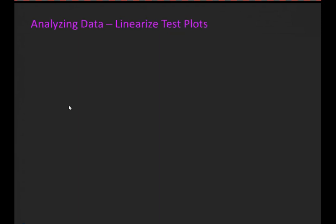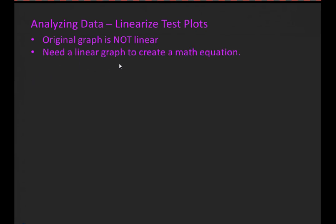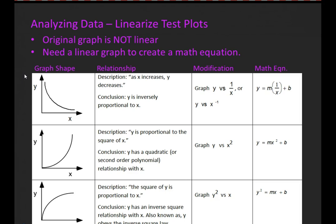Let's move on to our next way of analyzing data: creating linearized test plots. We won't always have to use this. However, sometimes the original graph is not linear, as in the previous example. When that's the case, we need to linearize the graph. The reason we need a linear graph is that's how we create a math equation from our data. This summary chart will help us figure out what we need to do to our original data to get a linear graph, based on the graph shape, the relationship, the modification needed, and the resulting math equation.